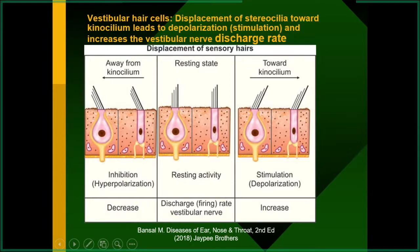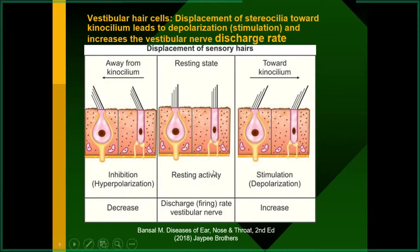A patient will feel vertigo if there is an imbalance between the two sides of vestibular firing. If there is balance between the two sides, the patient will not feel vertigo. But if there is any difference or imbalance, the patient will feel vertigo. Whether the vestibular system is stimulated or inhibited on one side, both conditions lead to vertigo. Students, can you tell me the condition in which the vestibular is stimulated or excited?